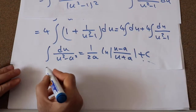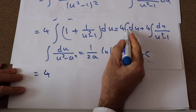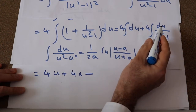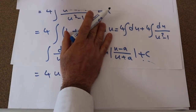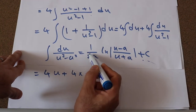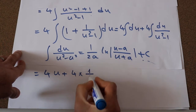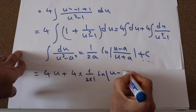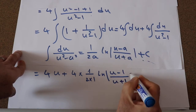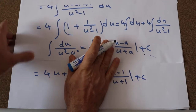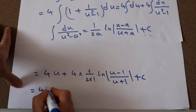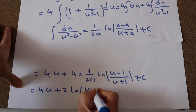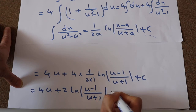Therefore, this integral will be equal to 4 times the integral of du, which is u, plus 4 times the integral of du divided by (u squared minus 1), which will be equal to 1 divided by (2 times 1), times ln of (u minus 1) divided by (u plus 1), plus c. This gives 4u plus 2 ln of (u minus 1) divided by (u plus 1), plus c.